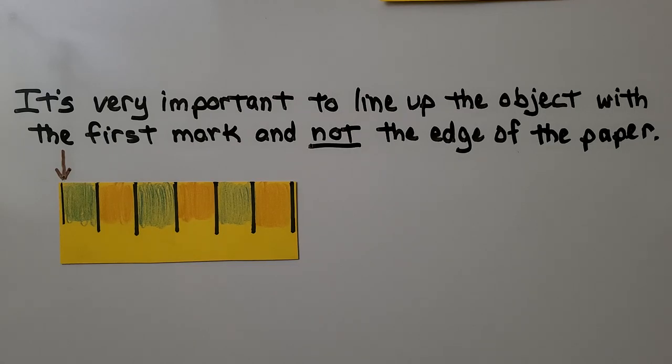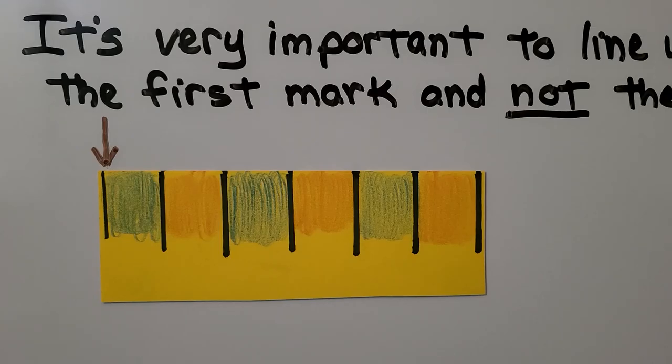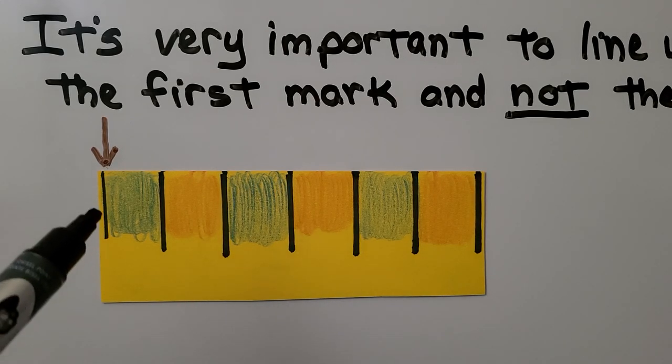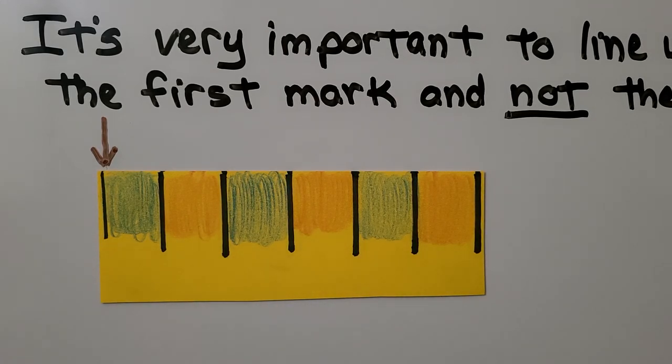It's very important to line up the object with the first mark right here and not the edge of the paper. There's actually a difference. If you look very closely, that could make our measure wrong because we'll be counting this little space here when we shouldn't be.